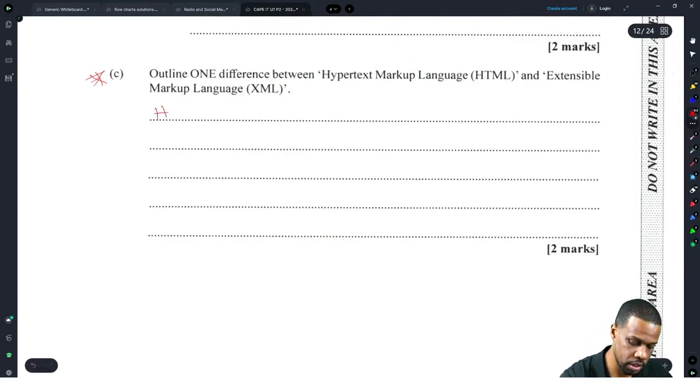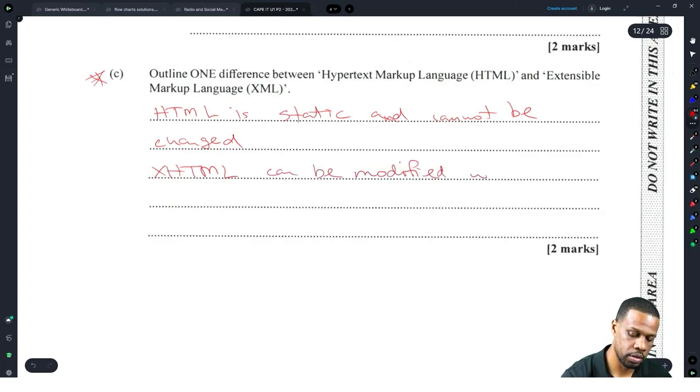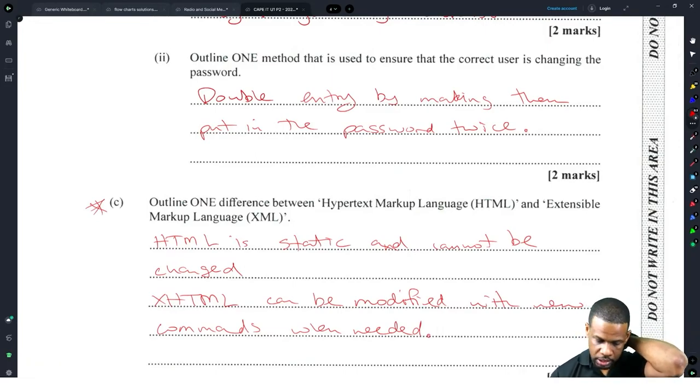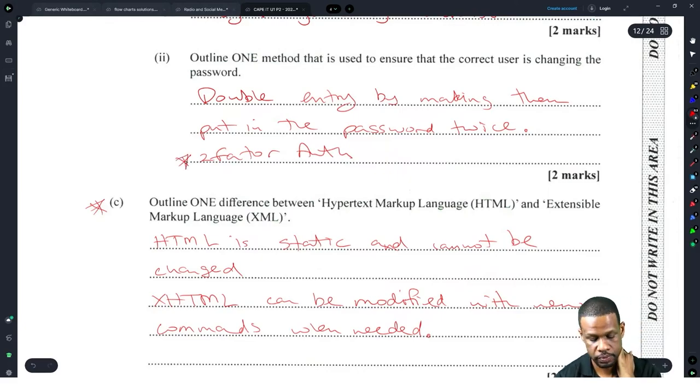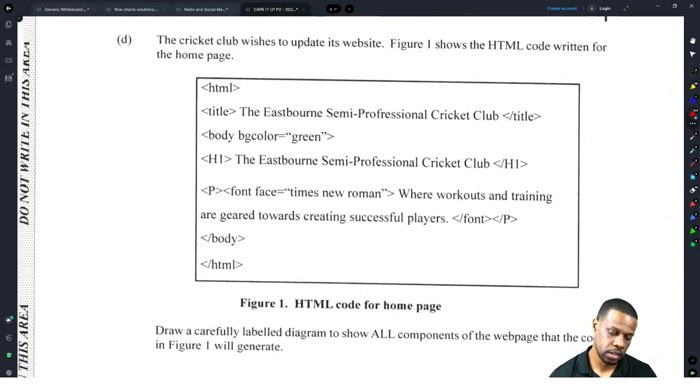One difference between HTML and XML. Yeah, people get mashed up here. This one destroys some people. But if you did past papers you would have seen that this question came already, and if you went through all the past papers that I did, you would have noticed too. HTML is static and cannot be changed. XML can be modified with new commands when needed.